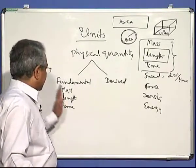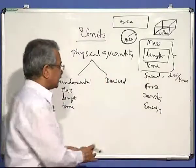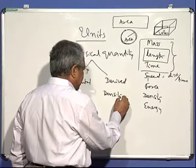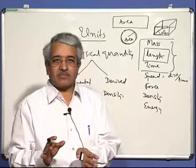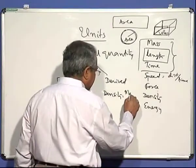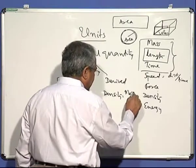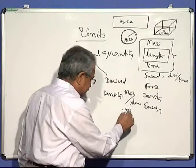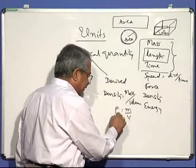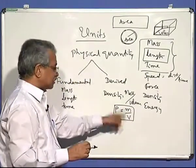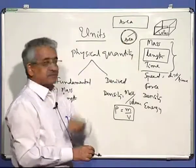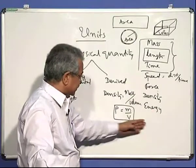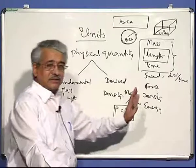Quantities that cannot be expressed in any more fundamental way are called fundamental quantities. All other quantities derivable from these are called derived quantities — speed, force, density, and energy. For example, density is defined as mass per unit volume. Volume itself is a derived quantity from length, so density becomes a derived quantity from mass and length.